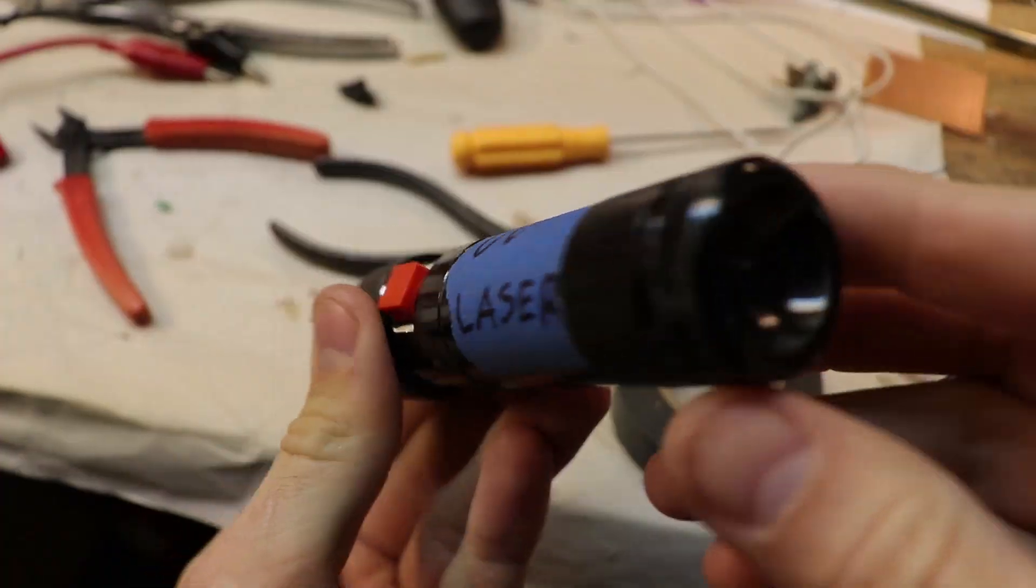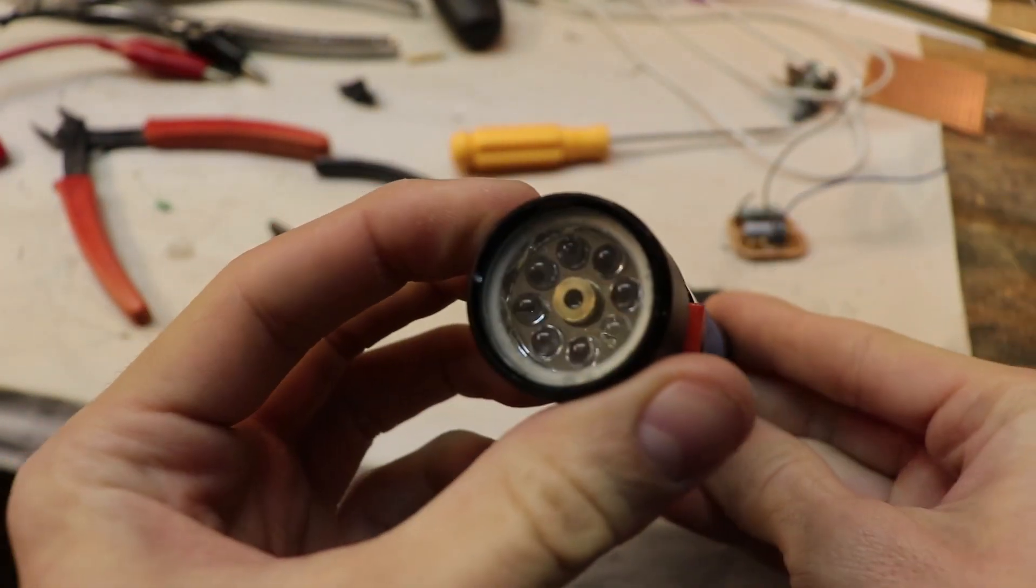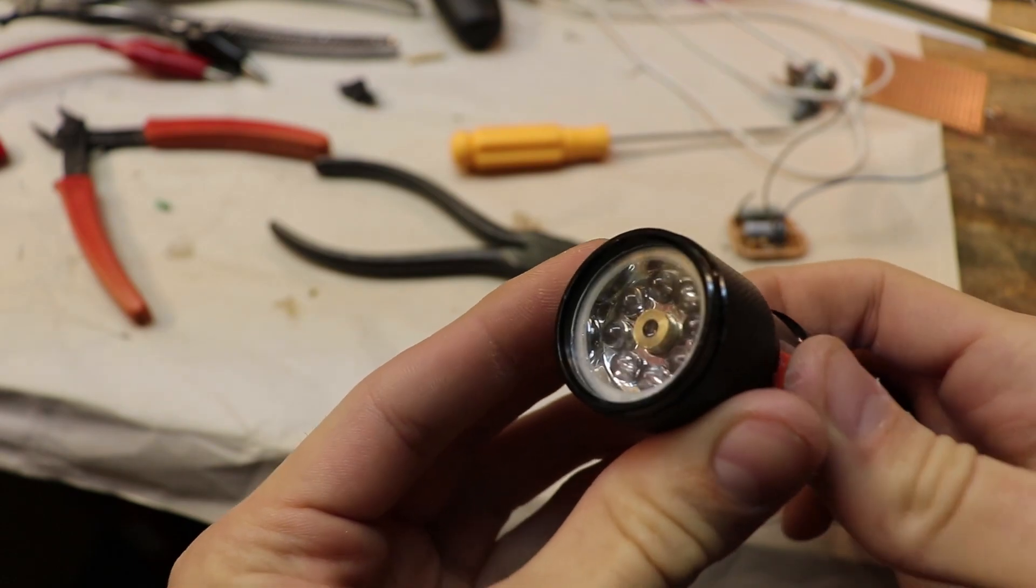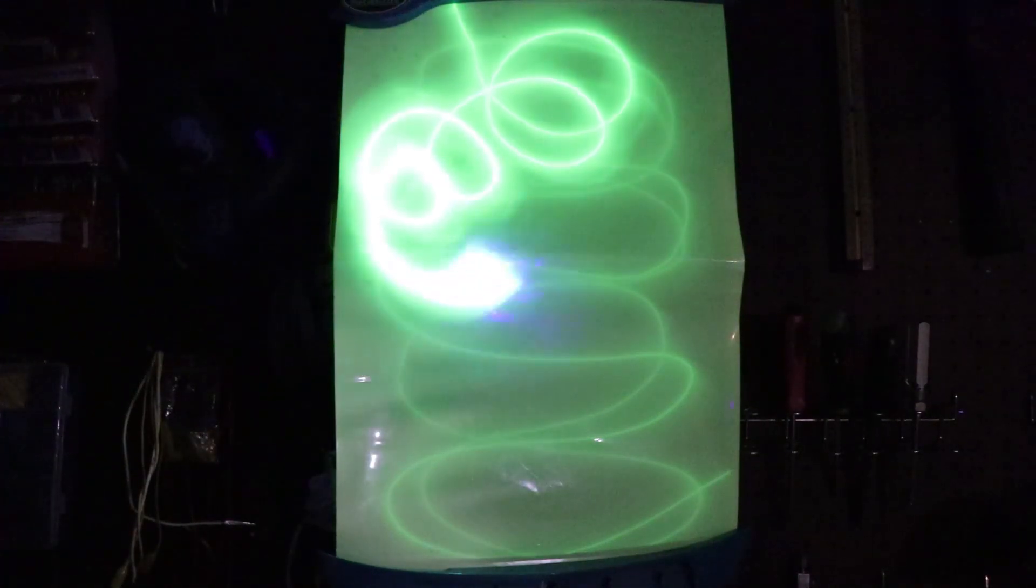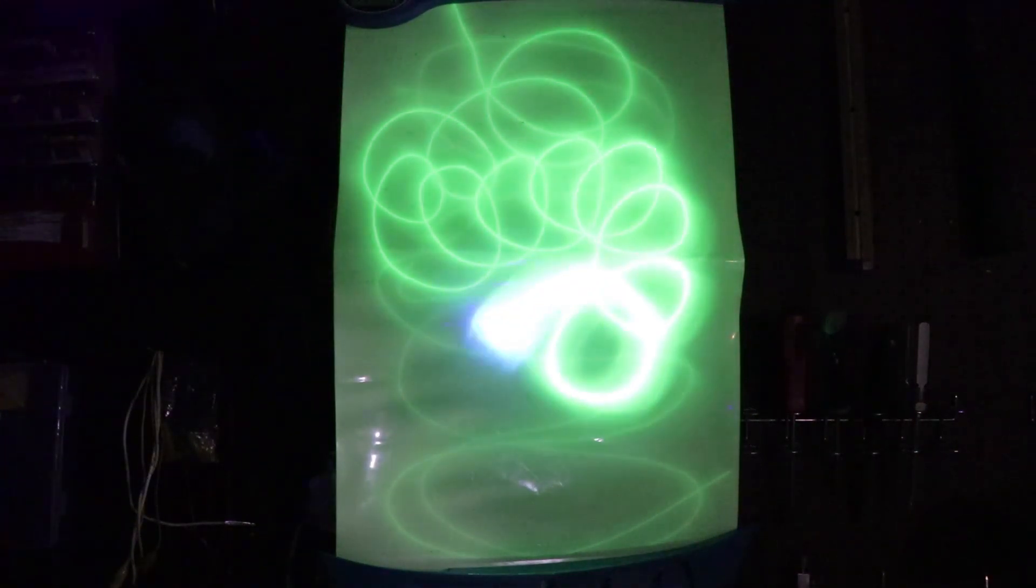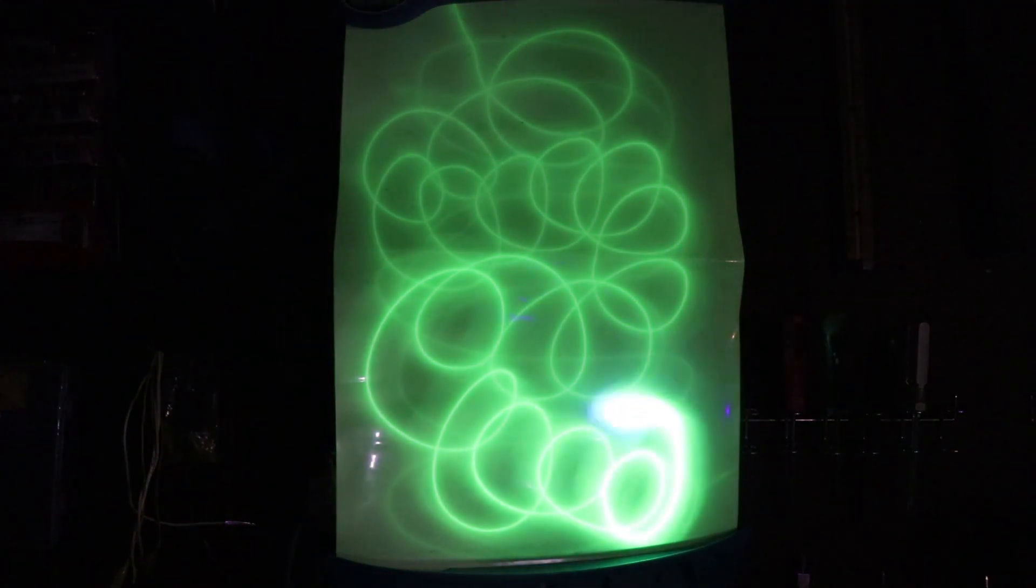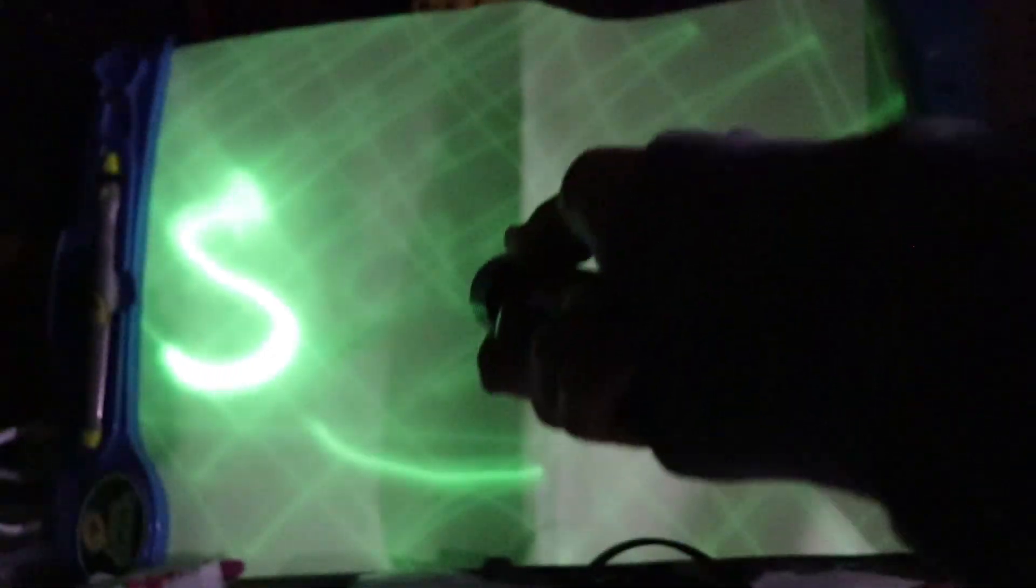The end result is this. A UV laser capable of making phosphors glow and curing UV resins. It would be interesting to make a DIY SLA printer out of this laser and a few moving parts. Let me know your thoughts in the comments. Till next time, thanks for watching.